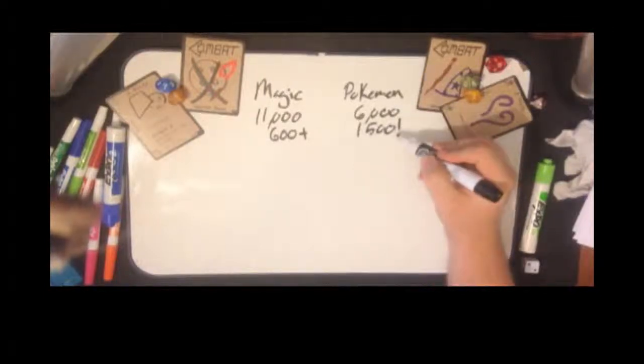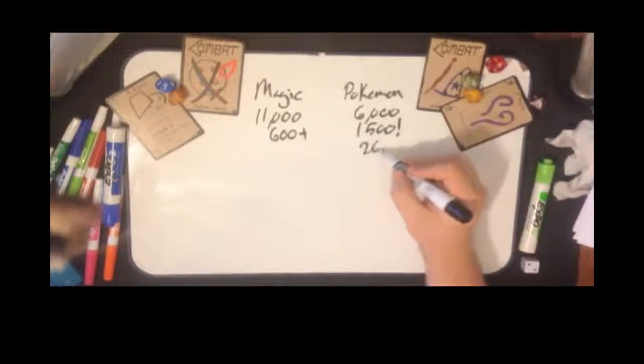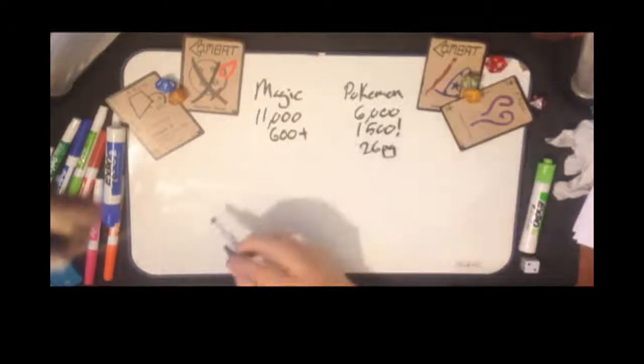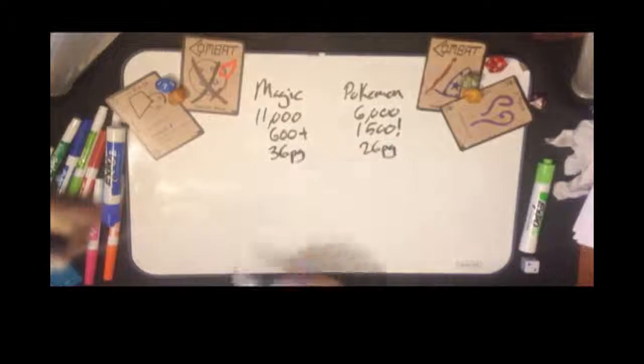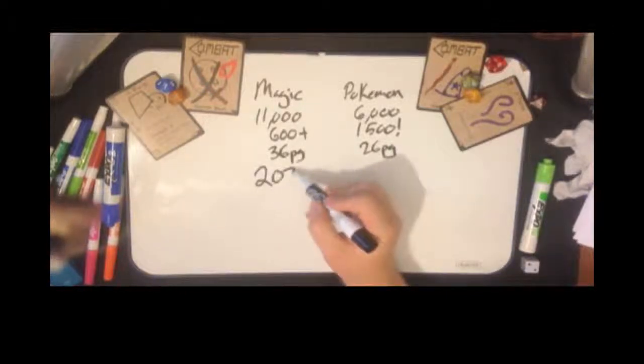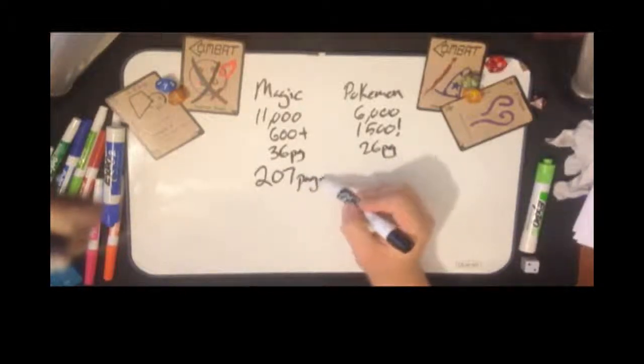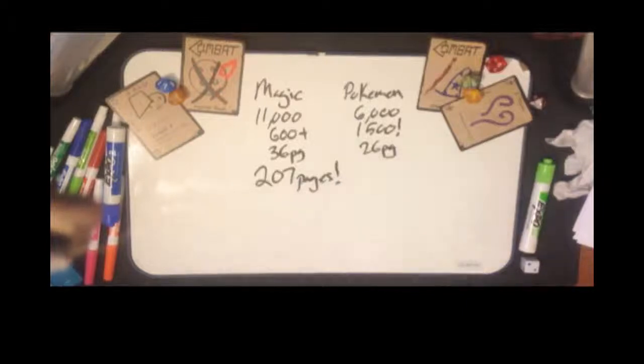And it includes an official rulebook weighing in at 26 pages. Magic the Gathering's basic rulebook weighs in at 36, and the official complete rulebook is 207 pages of tiny text. And that is entirely too much.